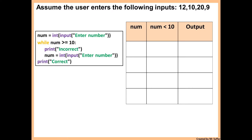Here we have another example, this time with an input. Whenever we have an input in a trace table, we go back to the start of the question and read it — normally they will tell you what the inputs are. So the first input is 12; inside num we're going to put 12. While 12 is greater than or equal to 10 — yes, that's true.